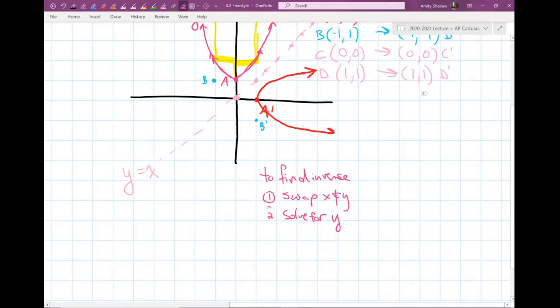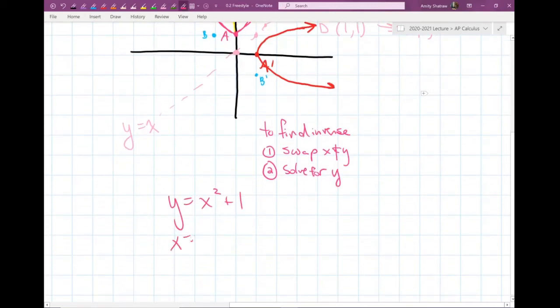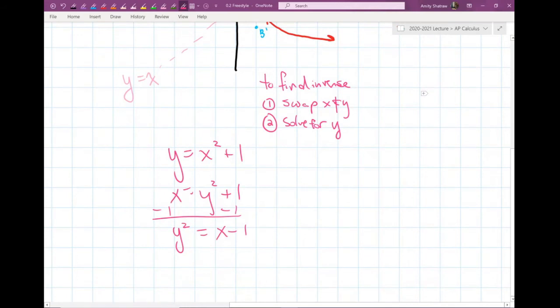The process for finding an inverse, which we are reviewing again, is that you swap x and y, and then you solve for the new position of y. So step 1, swap x and y. Step 2, solve for y. So I take y equals x squared plus 1. I'm going to swap x and y. I'm going to get x equals y squared plus 1, and then I want to solve for y. I'm thinking I'd like to move this plus 1, so I'm going to minus 1 and minus 1. And so now I have a y squared, and that equals x minus 1, and I'm going to take the square root now. I used to tell you, take the square root in a different color, because as soon as you do, you will remember to put that plus sign or that minus sign down.